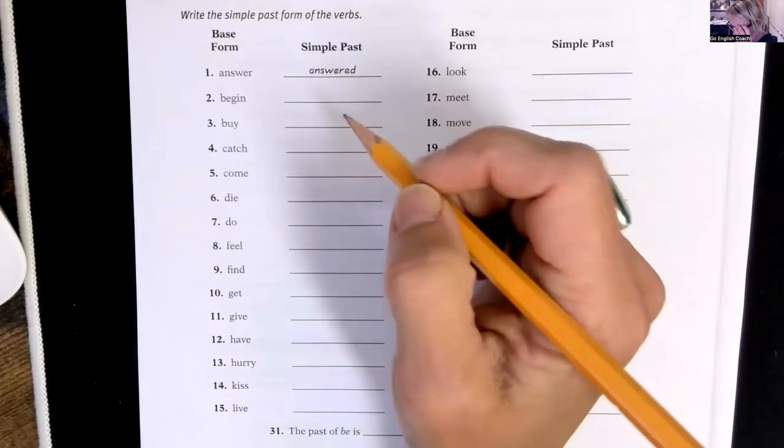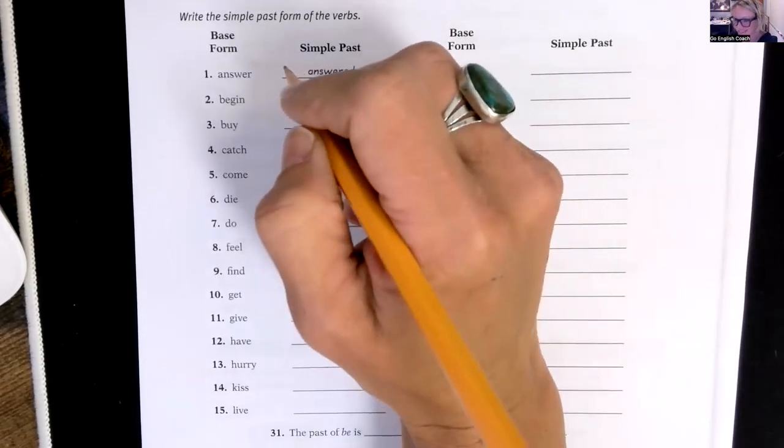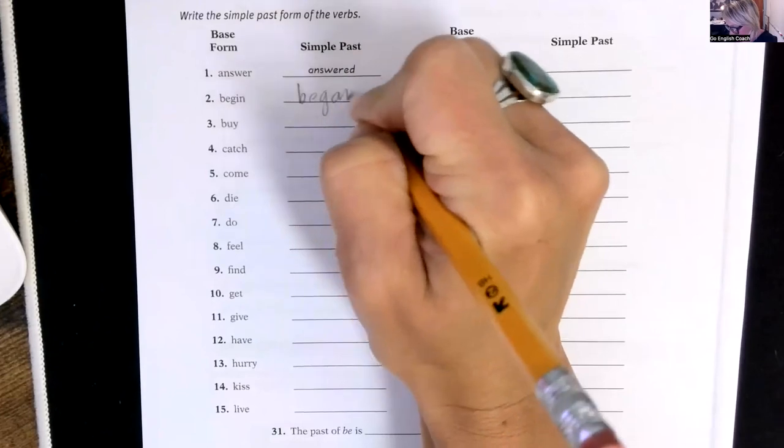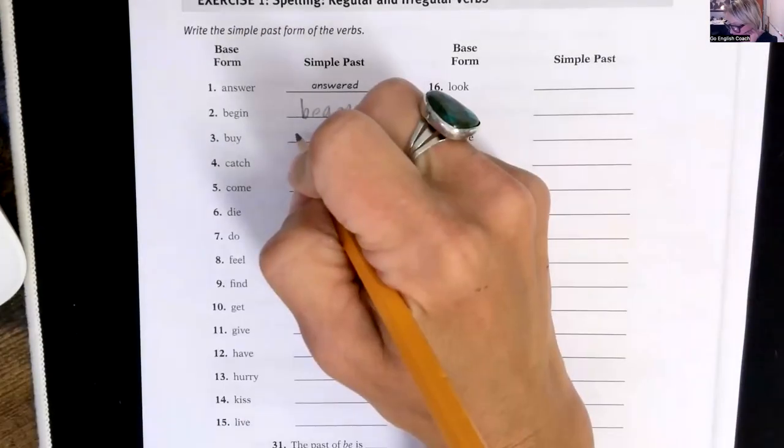So we've got begin. The simple past is began. Okay. Buy. This is irregular, so it's bought.